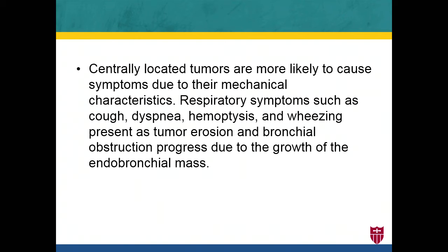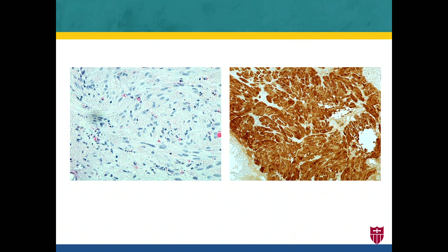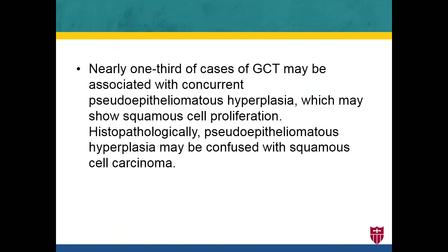Because of obstruction, post-obstructive atelectasis and post-obstructive pneumonia can also be seen, as in our patient. Microscopically, these tumors are polygonal with abundant eosinophilic granular cytoplasm. The nuclei are usually small and hyperchromatic, sometimes eccentrically located. The cytoplasmic granules, characteristic of granular cell tumors, are periodic acid-Schiff positive, and S-100 protein is invariably expressed. Importantly, nearly one-third of cases may have concurrent pseudoepitheliomatous hyperplasia showing squamous cell proliferation, which may be confused with squamous cell carcinoma on biopsy, though careful examination of the tissue usually allows distinction.